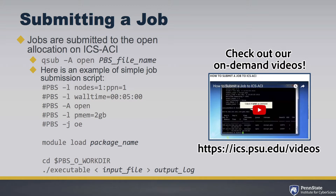If you're submitting a job and you're requesting the full memory on the node — 256 gigabytes — that job's going to sit a bit longer in the queue before it actually kicks off, because it's got to wait until a full node becomes available. If you're requesting less memory, that job would probably get submitted a little bit quicker.